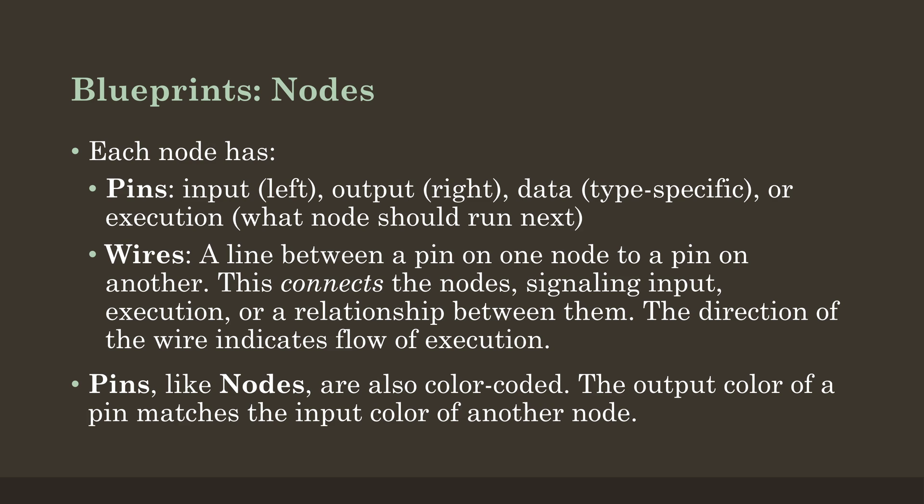Finally, pins, like the nodes themselves, are also color-coded — again, as a visual scripting language. The output color of a pin matches the input color of another node. This helps us signal what types of data we're dealing with. We care about the data, which corresponds to the code, and its execution moving from one node to the next.